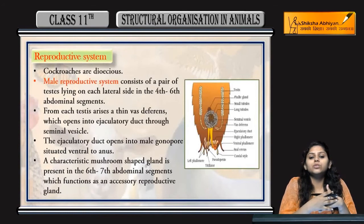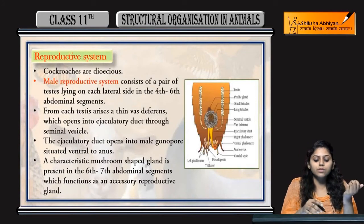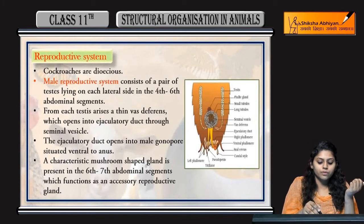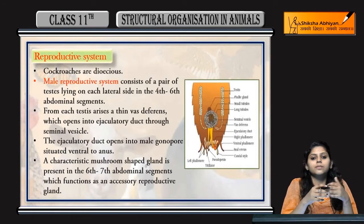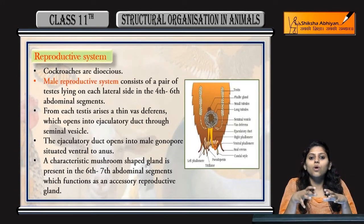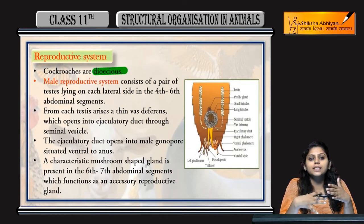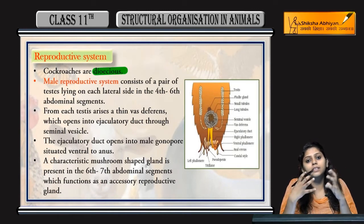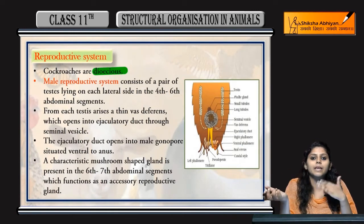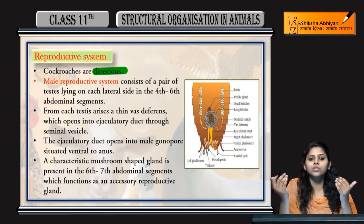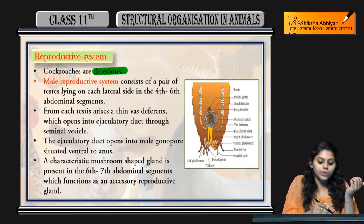Now coming to the reproductive system of cockroaches. Cockroaches are dioecious, which means their sexes are separate. Male cockroaches are along.